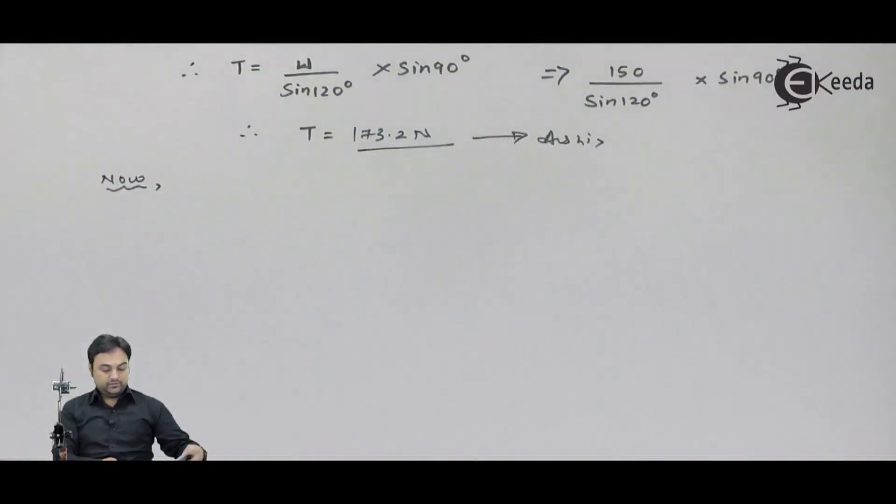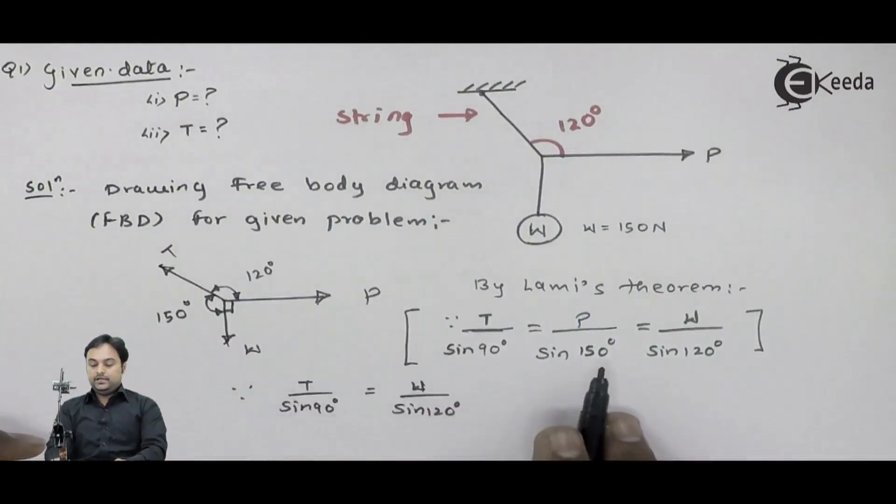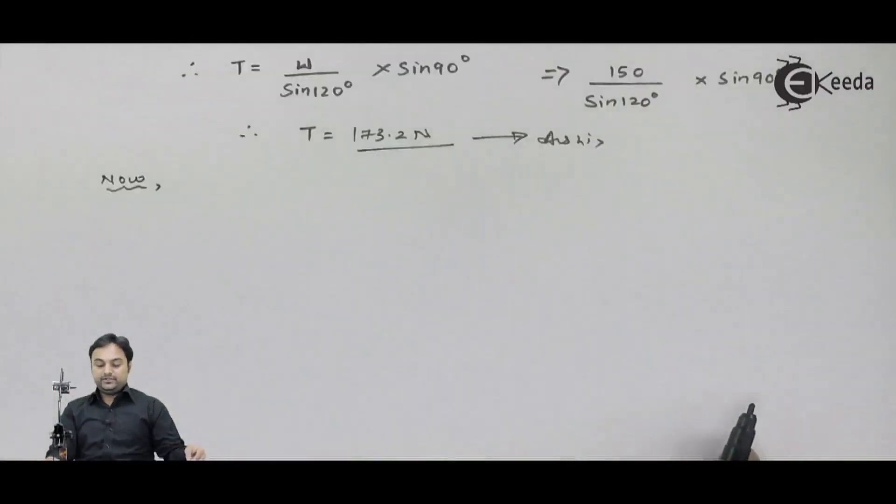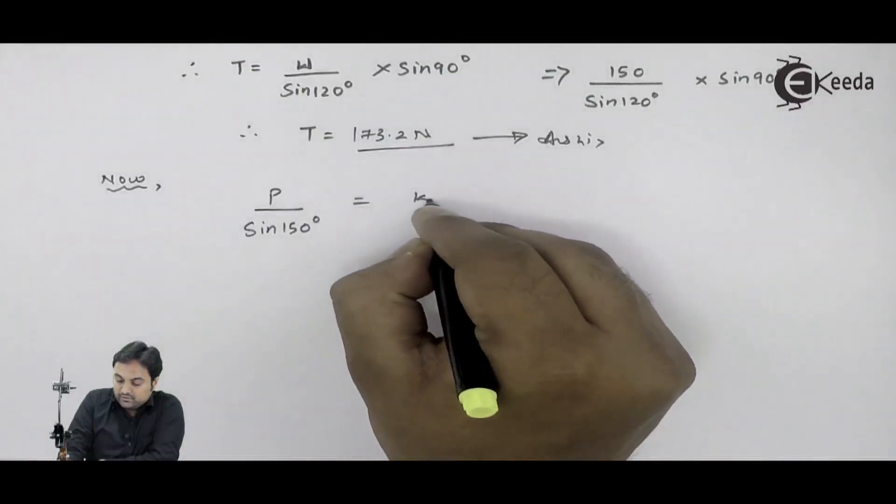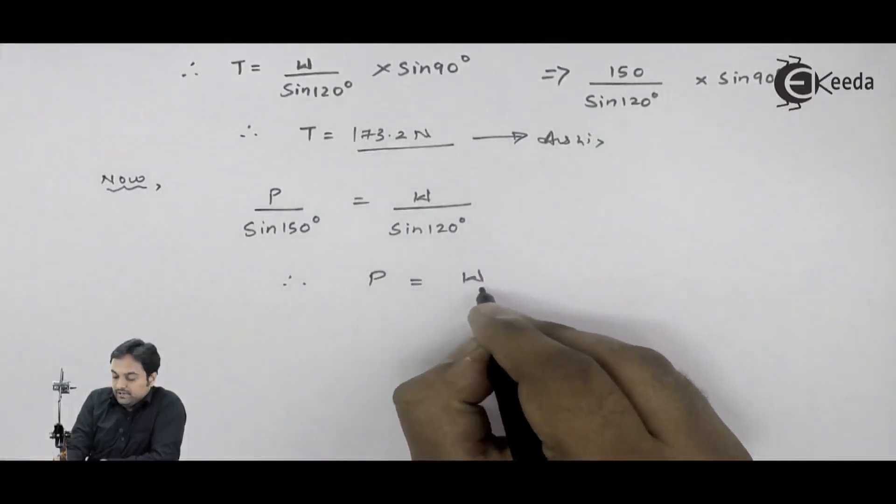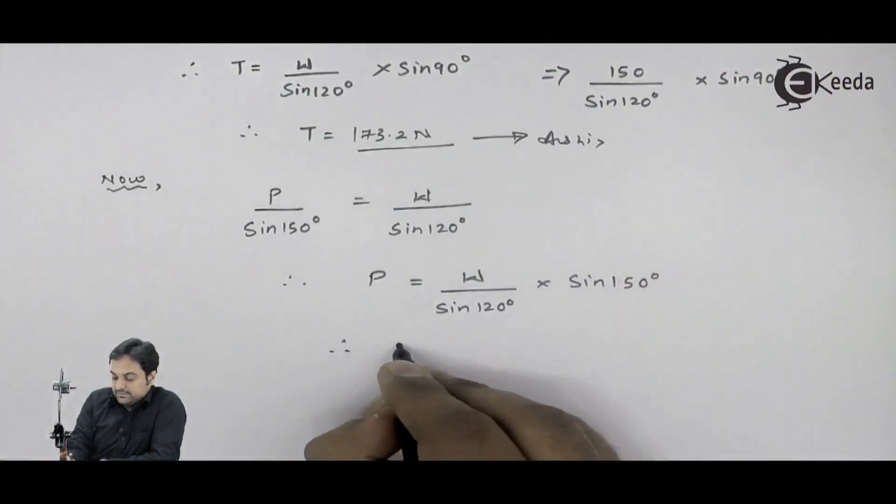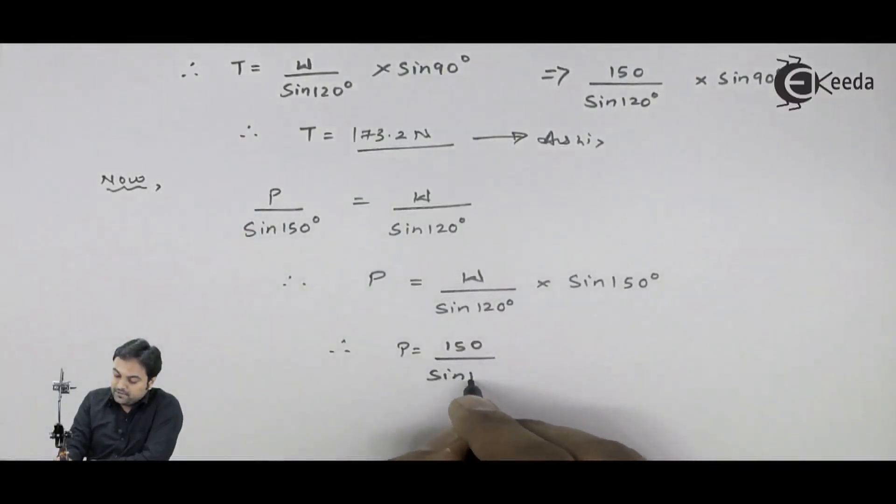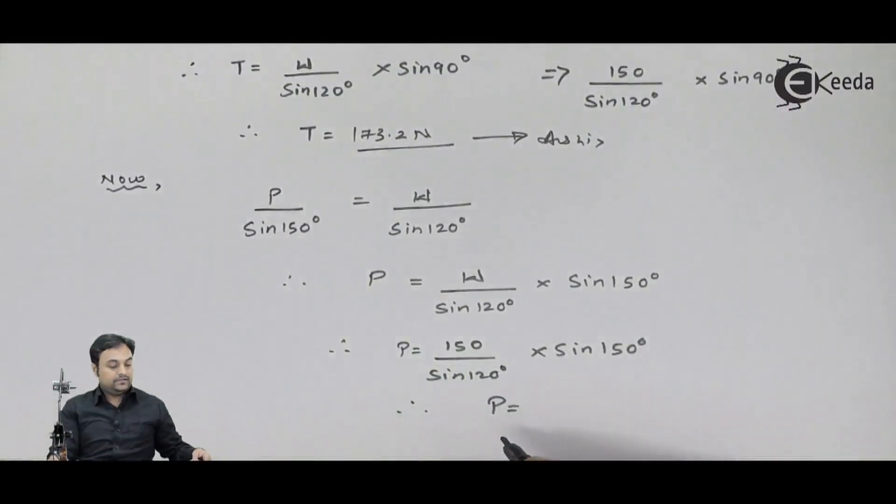Now for the second answer, after getting the tension in the string now I can calculate the value of horizontal load P. I would be using P sine 150 upon W divided by sine 120. Therefore I want to calculate P, it will be W sine 120 into sine 150. Hence P is equal to 150 upon sine 120 into sine 150. Hence my answer of P that comes out to be 86.6 Newton.